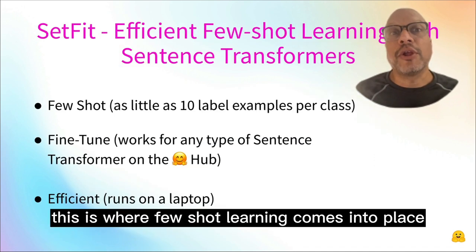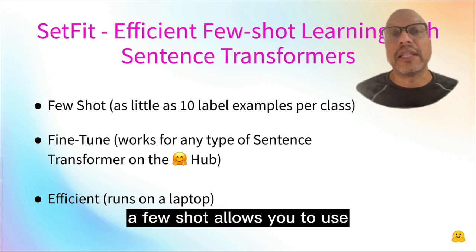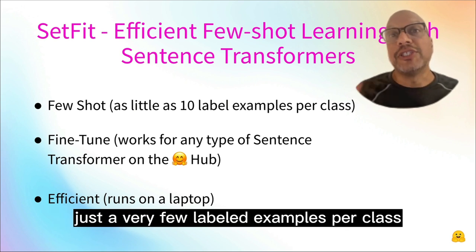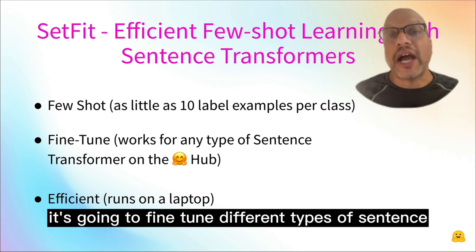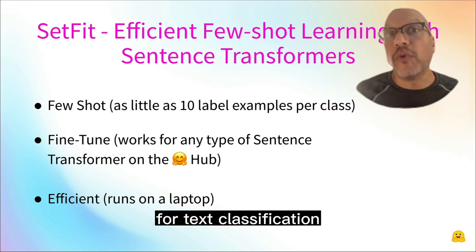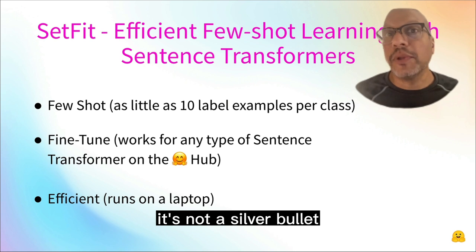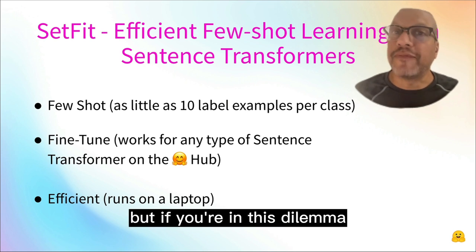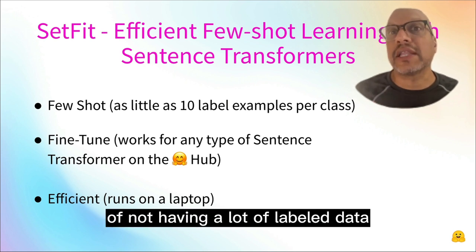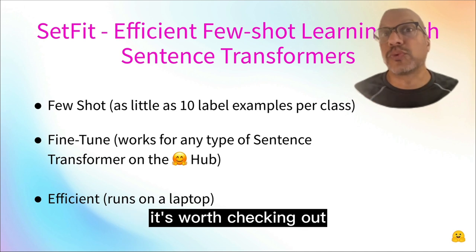This is where few-shot learning comes into play. Few-shot allows you to use just a very few labeled examples per class. It's going to fine-tune different types of sentence transformers for text classification, and it's a very efficient way to work. It's not a silver bullet, but if you're in this dilemma of not having a lot of labeled data and you're doing text classification, it's worth checking out.